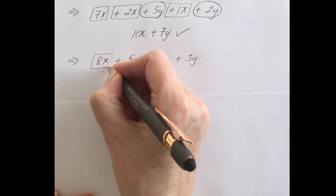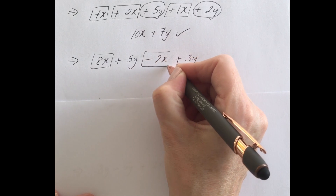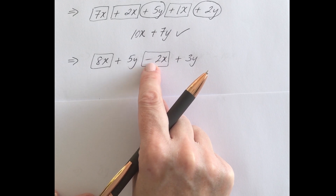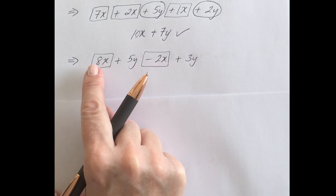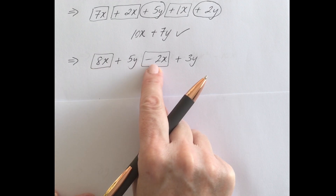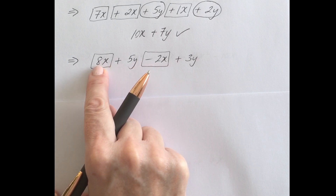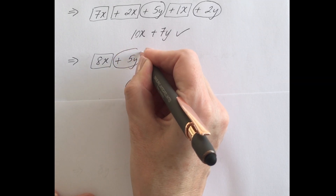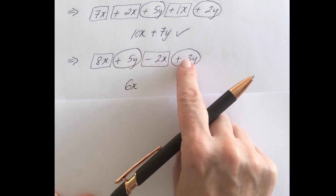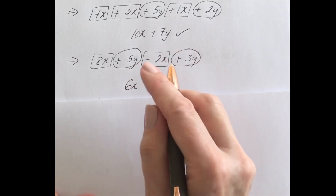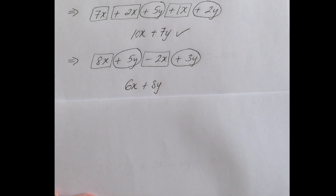This time I have 8x and minus 2x — make sure you include that minus in your box. This is the first time we're dealing with a minus term. You've got 8x's and you're taking away 2x's, so 8 take away 2 is 6, leaving you with 6x. Then you have plus 5y and plus 3y — 5 add 3 is positive 8, so it's a positive 8y. Final answer: 6x + 8y.